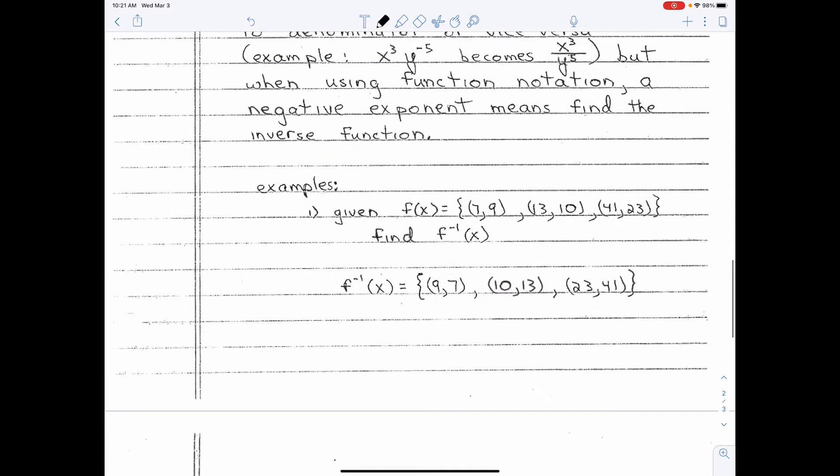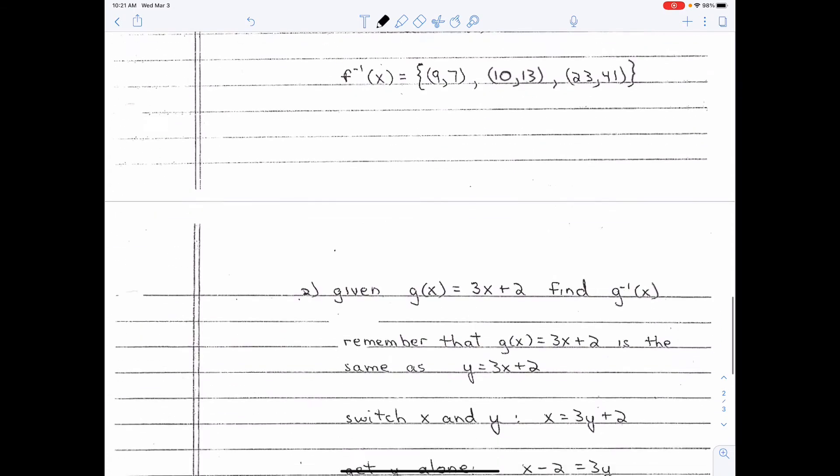So, for example, given f(x) equals {(7,9), (13,10), (41,23)}, find f to the negative one of x. That does not mean put it in the denominator. It means switch x and y. So, you get (9,7), (10,13), and (23,41).